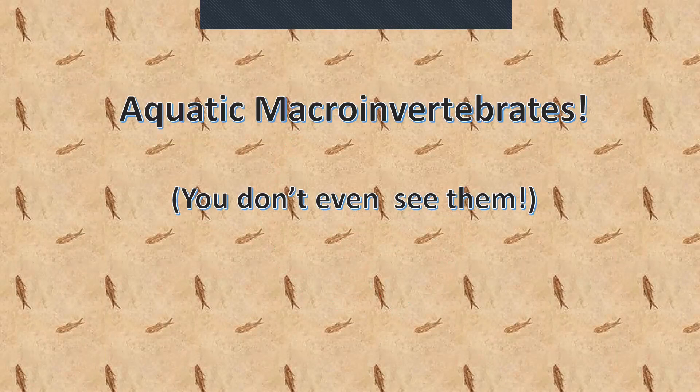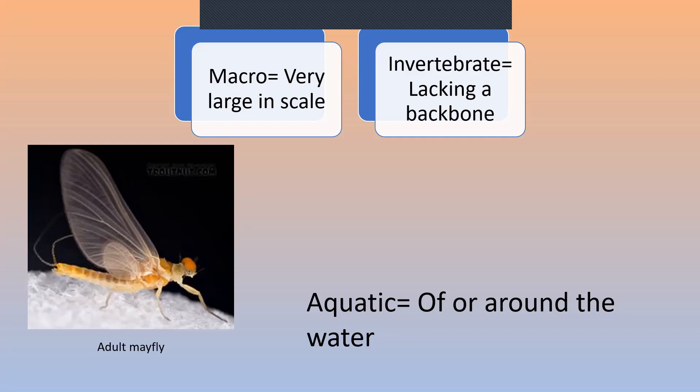Aquatic macroinvertebrates. To look at the name first and dissect it a little bit: aquatic means, as most people would know, of or around the water. Macro means very large in scale, and an invertebrate, as a lot of people will know, means an animal or creature lacking a backbone.